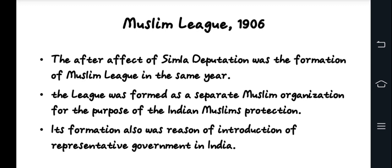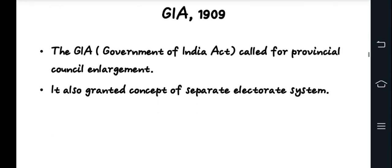The All India Muslim League's leaders advocated for Muslim political rights and interests, safeguarding them and promoting their cause. It played a crucial role in advocating for the political and social needs of Muslims, and laid the foundation for a separate Muslim state. Next, the Government of India Act 1909 introduced separate electorates, a crucial step for Muslim political representation.